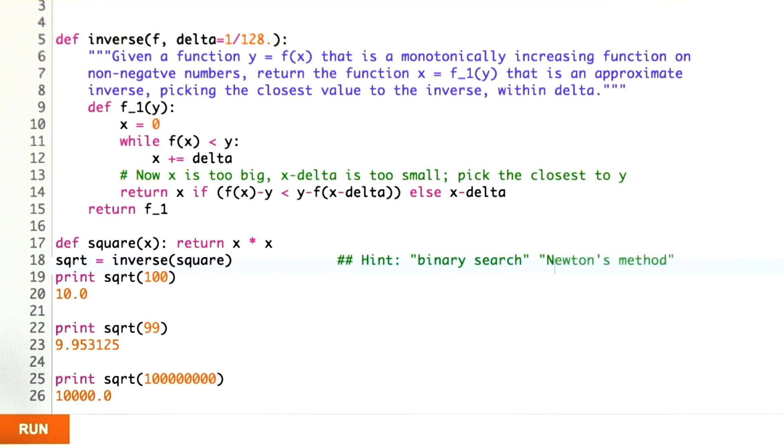And the other Newton's method. Do some research on those and then modify the definition of inverse so that when we say square root equals inverse of square, the whole function runs faster.